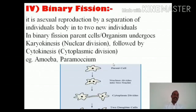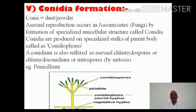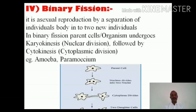The fourth method is binary fission. Binary fission is asexual reproduction by separation of a parent body into two new individuals. The parent cell undergoes karyokinesis, that is nuclear division, followed by cytokinesis, cytoplasmic division. In the amoeba, nuclear division is completed within the parent cell, giving rise to two daughter nuclei. The cytoplasm and plasma membrane then extend and are cut in the middle, giving rise to two daughter amoebulae. Binary fission is also practiced in organisms like Paramecium.